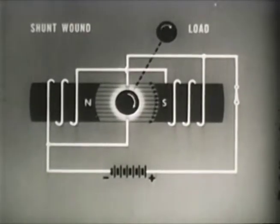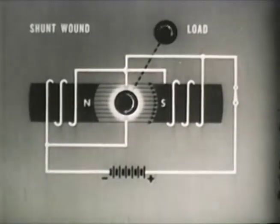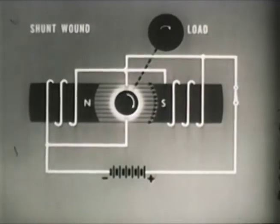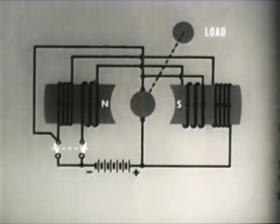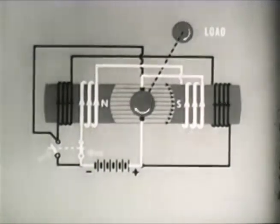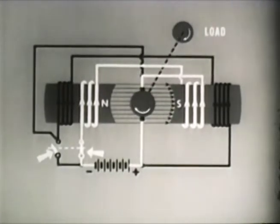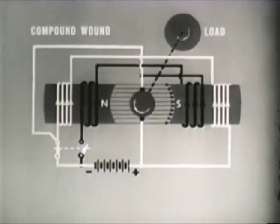In shunt wound motors, with the field coils connected in parallel across the DC input terminals, the starting torque is not too good. But since the field current is independent of the rotor current, the speed regulation is quite good. The compound wound motor combines the best features of both types: it uses a series section for good starting torque, then switches to a shunt arrangement for good speed regulation. DC electrical motors and generators are at the heart of much military equipment, and a proper understanding of them is therefore important.